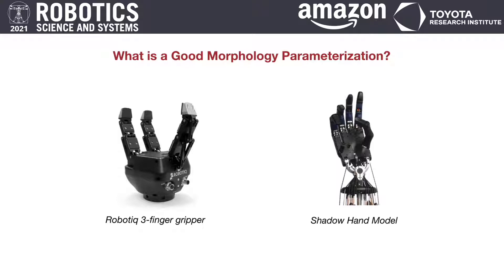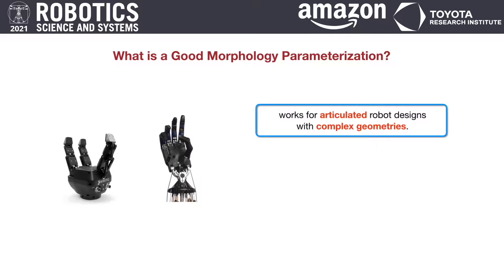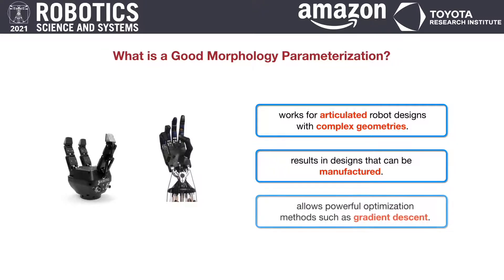However, given a fixed robot topology, optimizing its morphology is challenging since it requires a general and effective parameterization for the shapes. An ideal parameterization should work for articulated robot designs with complex geometries, result in designs that can be easily manufactured, and more importantly, the parameterization is better to be differentiable to allow efficient gradient-based optimization.